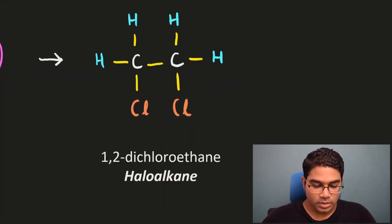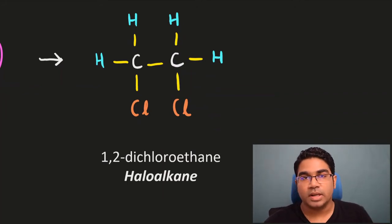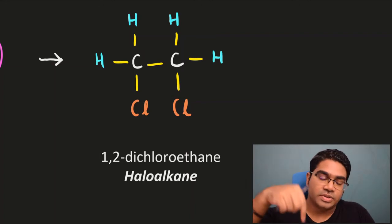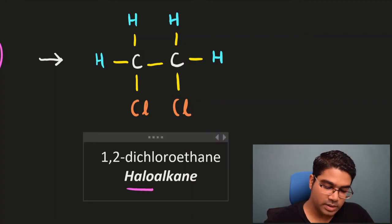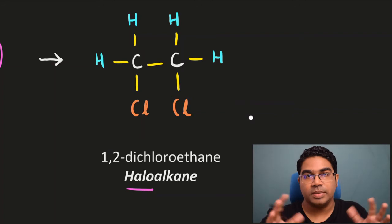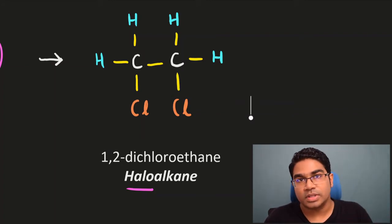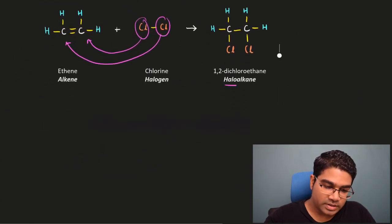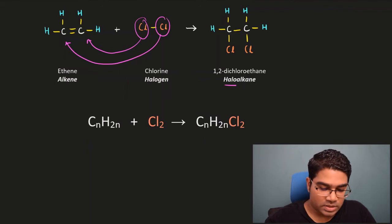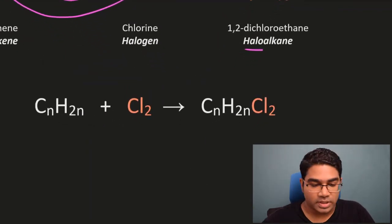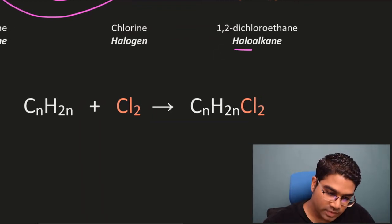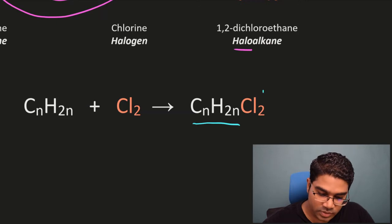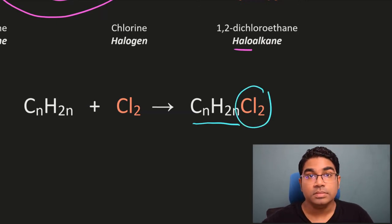This compound is called 1,2-dichloroethane — di because there are two chlorines. It is generally known as a haloalkane: the 'halo' refers to the halogen part and 'alkane' refers to the base structure, since we only have C-C single bonds. The general reaction is simply the alkene formula plus the halogen — you write the formula of the original alkene and add the halogen. This is straightforward because in addition reactions, all we are doing is adding atoms to the original alkene.